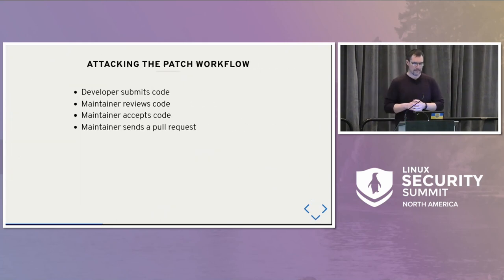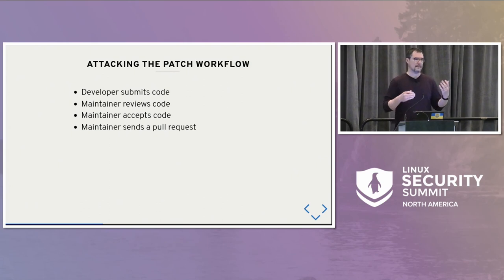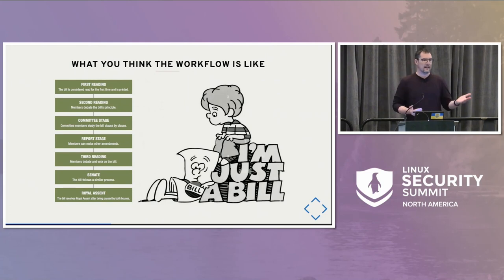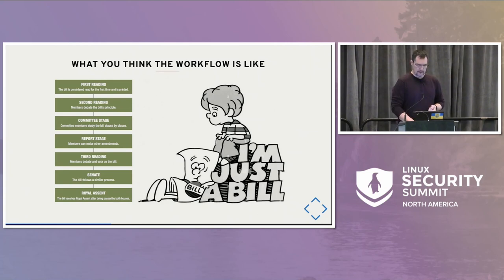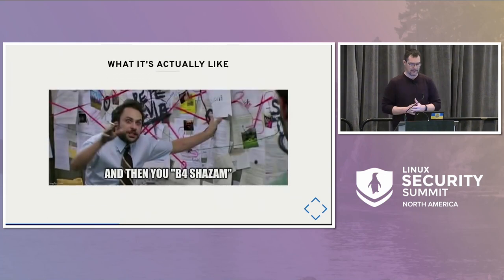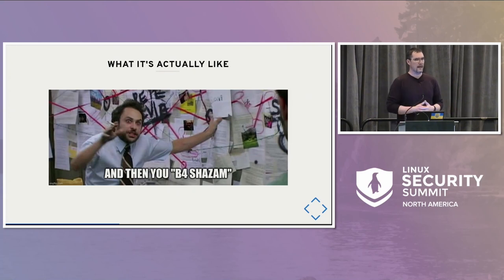But here's the 'but.' Attacking the patch workflow: the patch workflow for Linux kernel is fairly straightforward — developer submits code, maintainer reviews, accepts, and sends a pull request to Linus. People think there's a very rigorous process — illustrated by how to pass a law in Canadian Parliament — but this is what it's actually like: it goes through multiple revisions, gets rejected, sent back. Some subsystems use Gerrit, some use GitLab, and before code goes out for review, internally at a company it could use whatever — we don't even see that part.